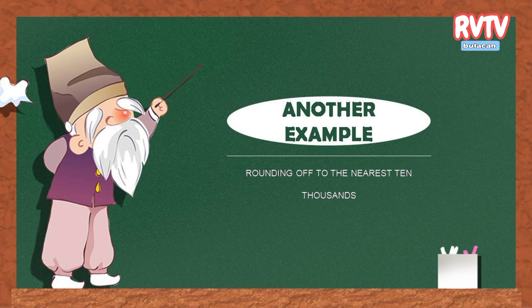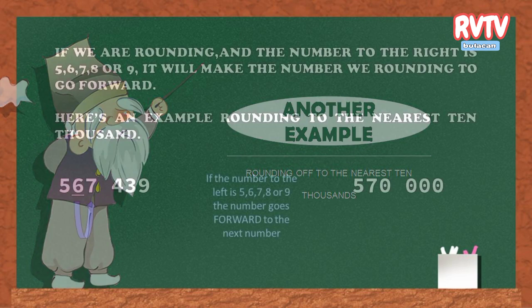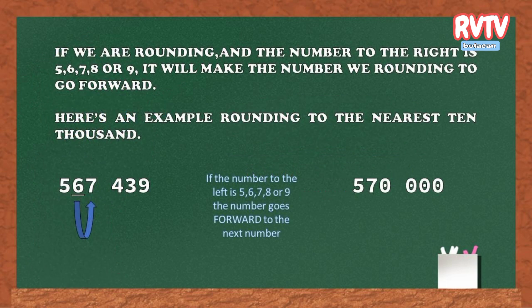Here's another example of rounding off to the nearest ten thousands. If we are rounding and the number to the right is 5, 6, 7, 8, or 9, it will make the number we are rounding go forward.